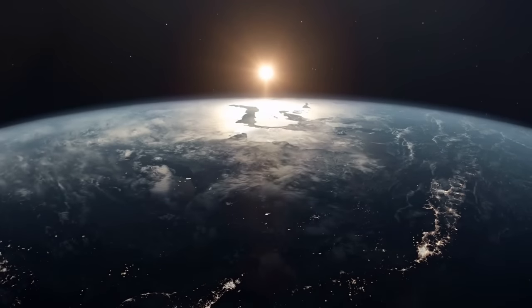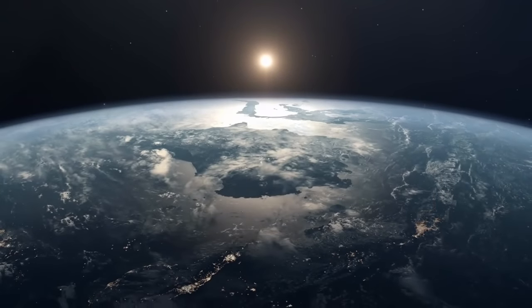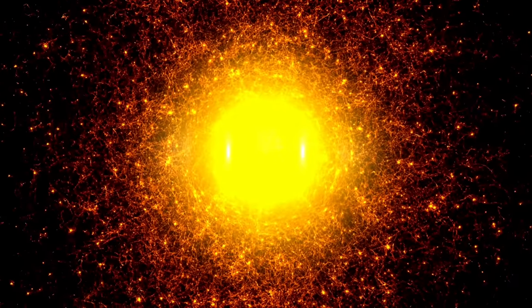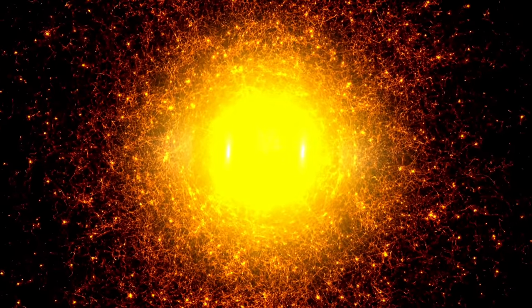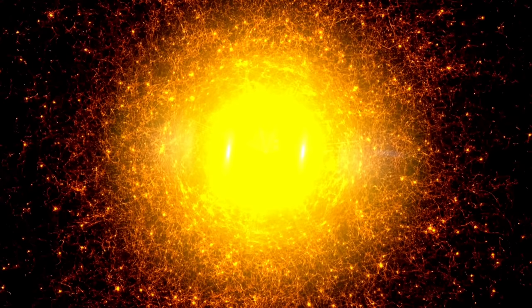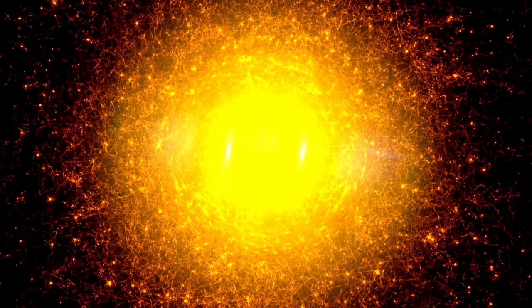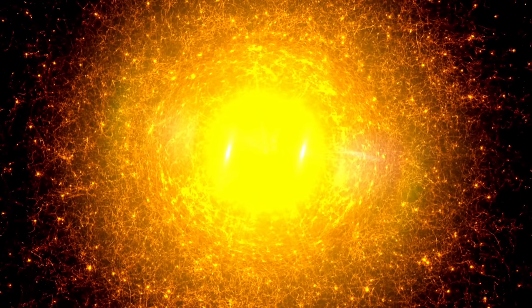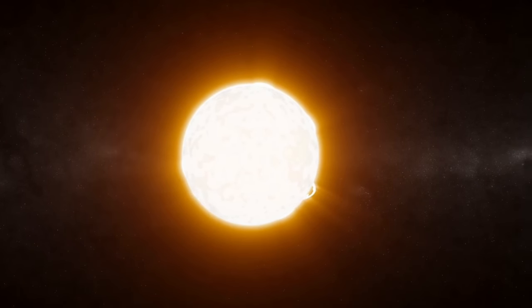During the solar minimum, there are fewer sunspots and limited solar activity. However, during the solar maximum, the sun's power increases and there are more sunspots, flares, and coronal mass ejections. Solar flares are violent eruptions of energy that can happen quickly and release an immense amount of energy. They are like a snapping of the whip, accelerating particles close to the speed of light. On the other hand, coronal mass ejections are massive blasts that expel billions of tons of superheated gas and plasma into space. These ejections can create shock waves and are crucial for understanding space weather.